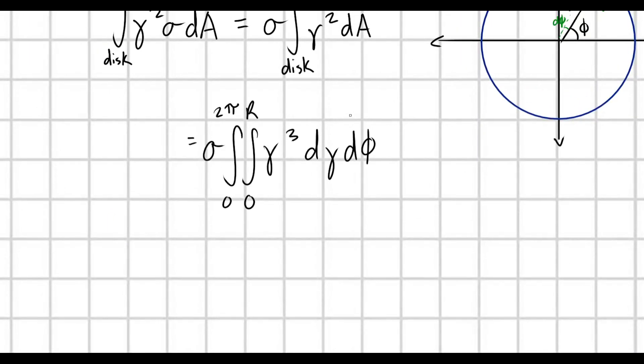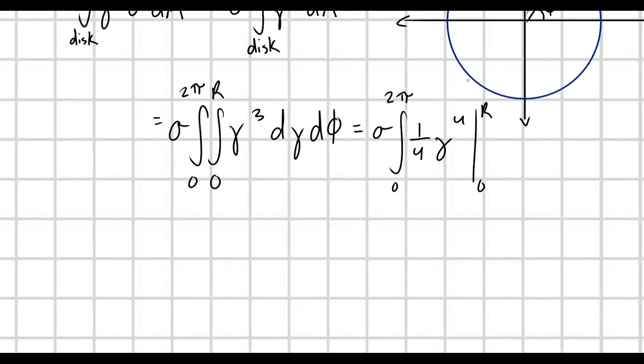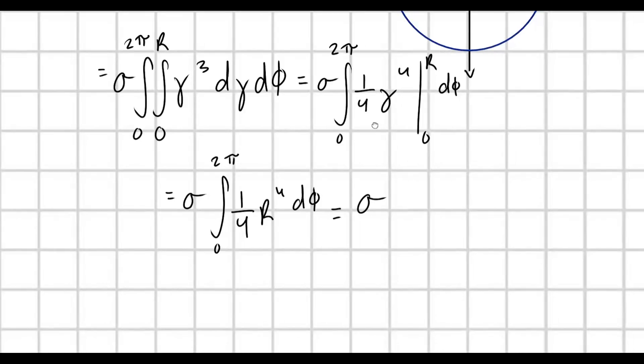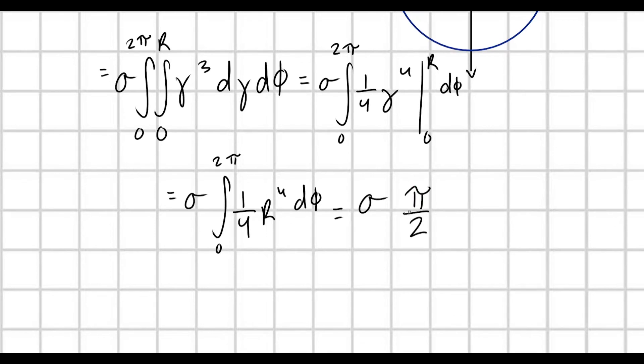Awesome! Let's go ahead and do this integral. This is really quick. This is just going to be equal to sigma times integral from 0 to 2 pi of 1 fourth gamma to the fourth. And we're going to evaluate this guy from 0 to R. And we're going to get from this sigma integral from 0 to 2 pi. Oh, whoops! I forgot to write out a little d phi here. That's okay. 1 fourth, R to the fourth, d phi. Sweet! And, this is just going to end up giving us sigma times pi over 2 times R to the fourth. Sweet!